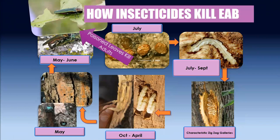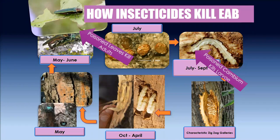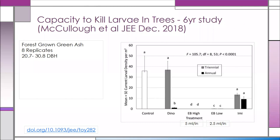How do insecticides kill EAB? When you inject a tree, the insecticide is accumulated into the leaf, and the adult beetle feeding on the leaf is killed before she can lay eggs. Also, the cambium becomes poisoned and larvae are killed as well — so it's a two-way approach: killing adults feeding on leaves and killing larvae feeding on the vascular tissue beneath the bark. There's been really nice work done by Deb McCulloch published in December in the Journal of Economic Entomology. She worked with forest-grown trees with a diameter at breast height — DBH — between 21 and 31 inches.